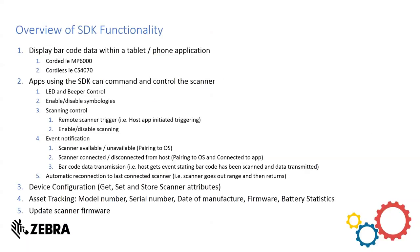So to start this off, let's talk about what this SDK can do. At a high level, this SDK is aimed at two types of devices - phones and tablets in general. It works with both corded devices - say an MP6000 or a DS8108 series - or it can work with cordless devices, say a CS4070 or a DS8178. When it's cordless, it's a scanner with no cradle involved going straight to your phone or tablet via Bluetooth connection.